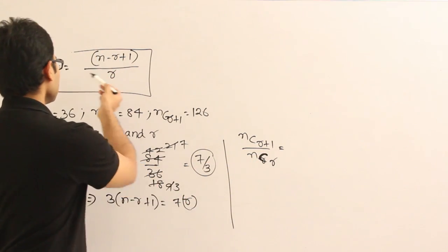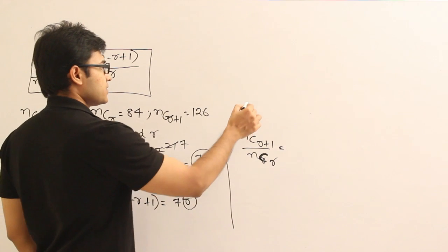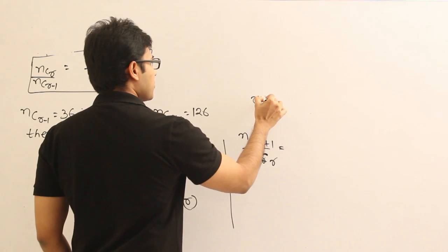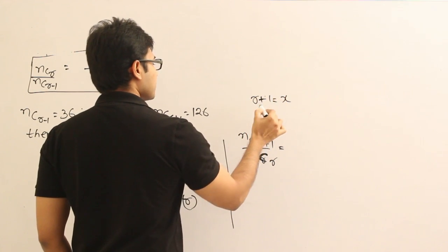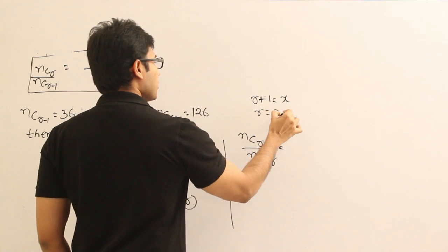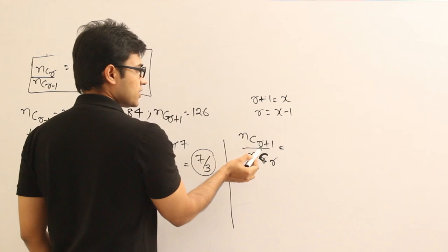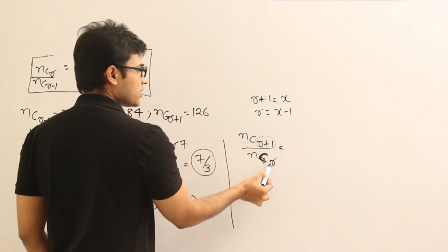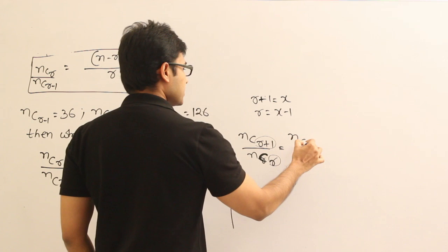So just to convert it into this formula type, let us say r+1 equal to X. Then if r+1 equal to X, what happens to r? r equal to X-1. Then if I substitute in place of r+1 and r, X and X-1, we get this as...